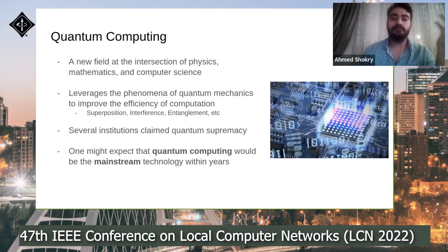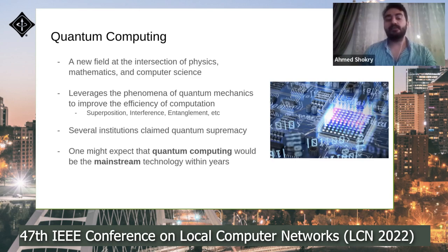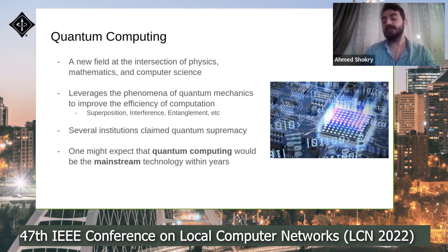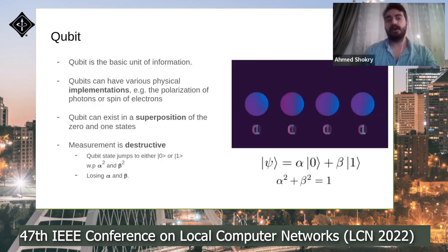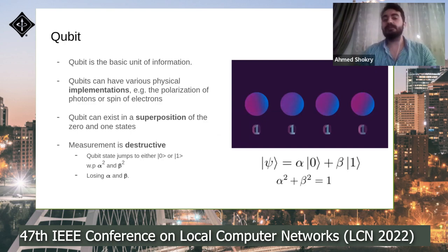Quantum computing is a new field at the intersection of physics, mathematics, and computer science. It leverages the phenomena of quantum mechanics. Several academic institutions claim quantum supremacy, and one might expect quantum computing to become mainstream technology within years. A qubit is the basic unit of information, like the classical bit. Qubits can have various physical implementations, like polarization of photons or spin of electrons.